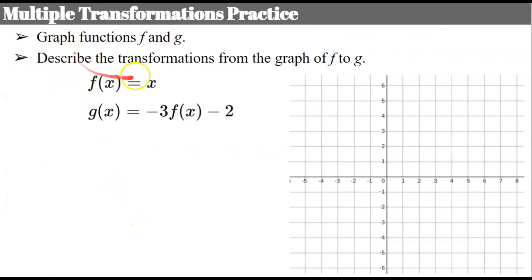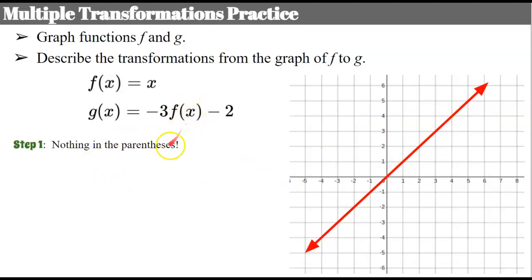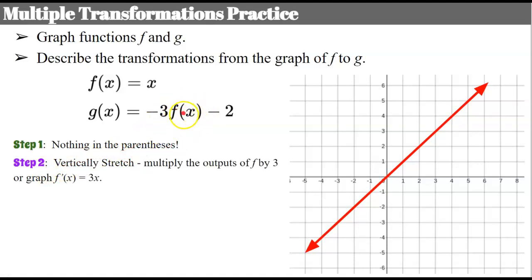Now I want to model one for you. We're going to graph these functions f and g and then describe the transformation. First we're going to graph f, which has a y-intercept of zero and a slope of one. Step 1: there's nothing in our parentheses, so horizontal translation is not necessary. Step 2: there's nothing inside the parentheses, but outside we have a factor a of 3. So we're going to vertically stretch function f, which means multiplying the outputs by 3. You can graph this passing through the y-intercept at zero, rise 3, run 1.